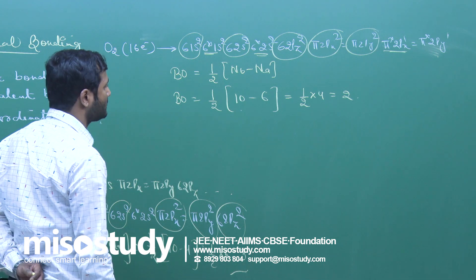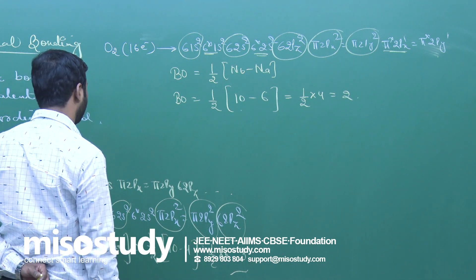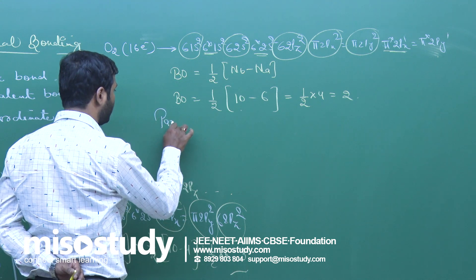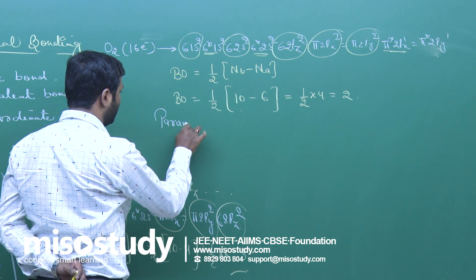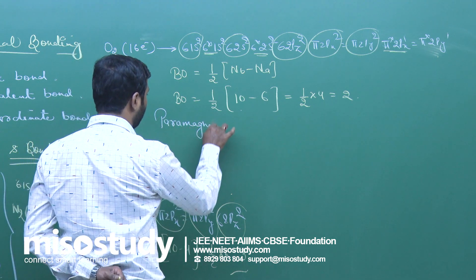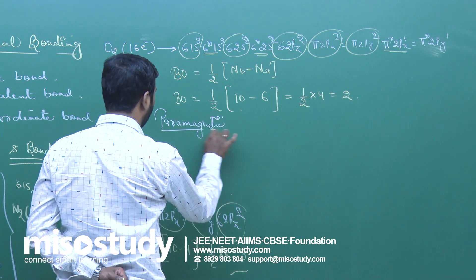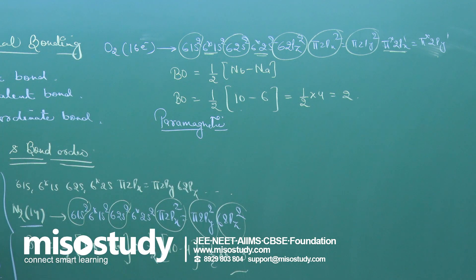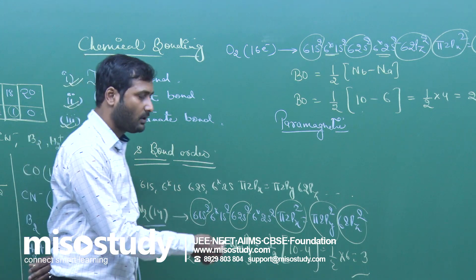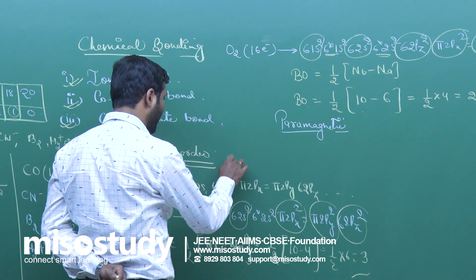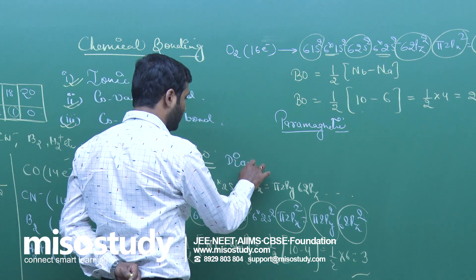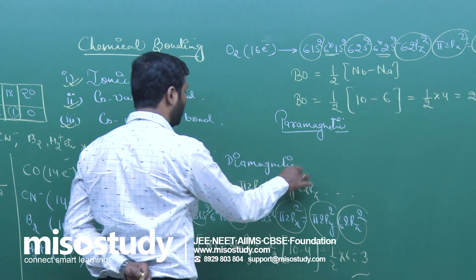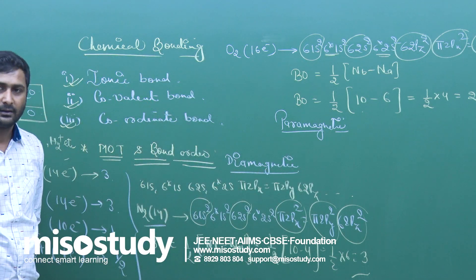Is O2 paramagnetic or diamagnetic? If there is a presence of unpaired electrons, then it is paramagnetic. If I consider N2, in that case there is no unpaired electron, so N2 is diamagnetic. This is the use of MOT theory.